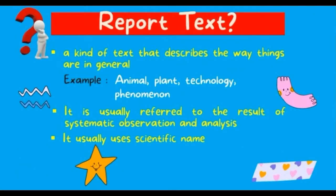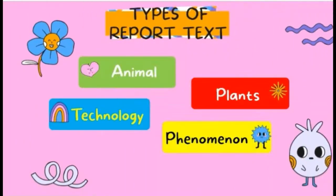In report text, it usually refers to the result of systematic observation and analysis. Beside that, it usually uses scientific names. The types of report text are four: the first is animal, the second is plant, the third is technology, and the last is phenomena.